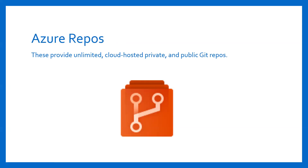Azure Repos provides Git repositories or Team Foundation Version Control for source control of your code. Azure Repos provides unlimited cloud-hosted private and public Git repos. From Azure Repos you gain access to Git-based or TFVC repositories to support version control of your software project. You can review, download, and edit files; review the change history for a file; review and manage commits that have been pushed; review, create, approve, comment on, and complete pull requests; and add and manage Git tags.